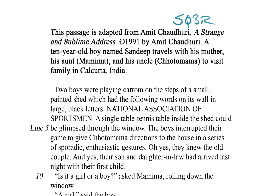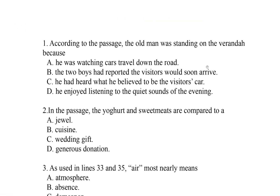Let's get started with that introductory blurb. The blurb is very important — don't skip it, because it gives you all sorts of important information. This passage is adapted from Amit Chowdhury, 'A Strange and Sublime Address,' copyright 1991 by Amit Chowdhury. A 10-year-old boy named Sandeep travels with his mother, his aunt Mamima, and his uncle Chotomama to visit family in Calcutta, India. So already we've got at least four characters: Sandeep, his mother, his aunt Mamima, and his uncle Chotomama. And it takes place in India.